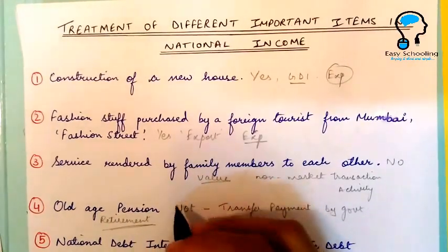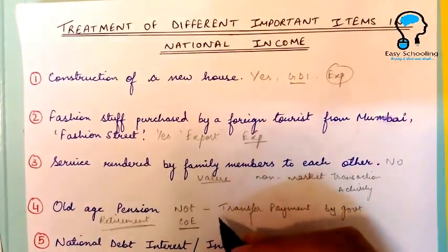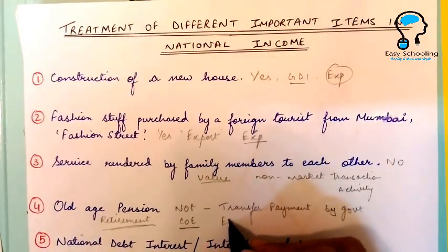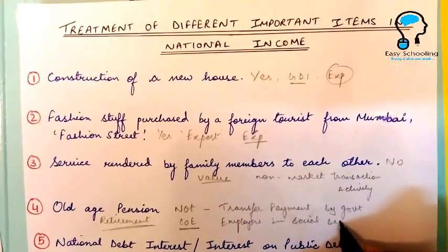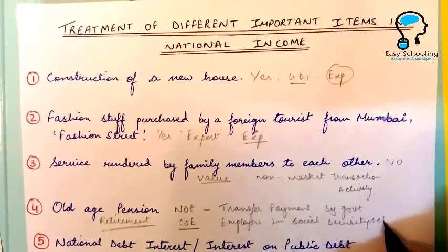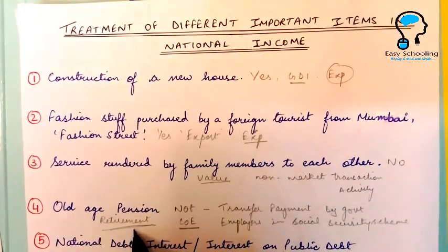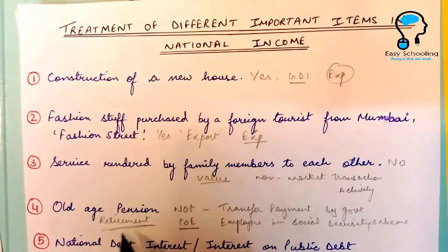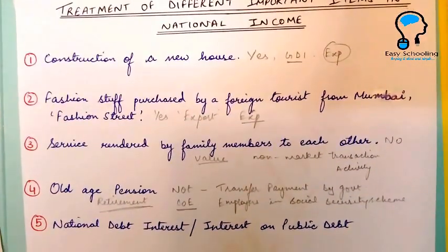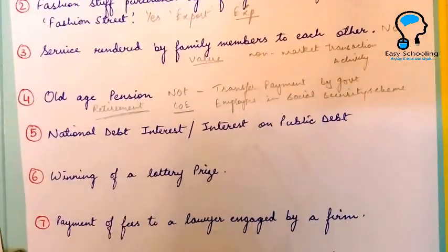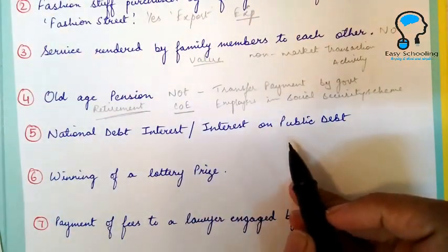You should not confuse old age pension with retirement pension. Retirement pension is going to be included in compensation of employees under the income method — that is the contribution of employers in social security schemes. Retirement pension you receive when you have worked; old age pension is a gift by the government.